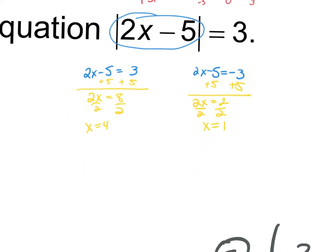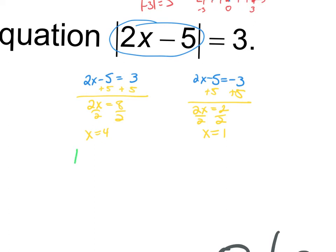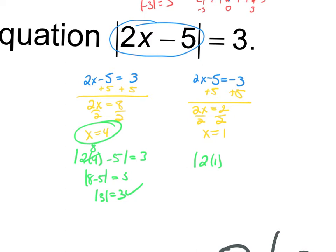Let's check — always go back to the original. The absolute value of 2 times 4 minus 5: 2 times 4 is 8, 8 minus 5, absolute value of 3, does that equal 3? Yes. Same thing: absolute value of 2 times 1 minus 5. You go back to the very original to check — not negative 3. 2 minus 5, absolute value of negative 2, the absolute value of 2 is 2... wait, the absolute value of negative 2 is 2. Actually the absolute value of 3 is 3, so this solution works. Two solutions.